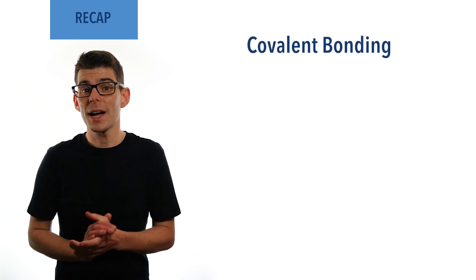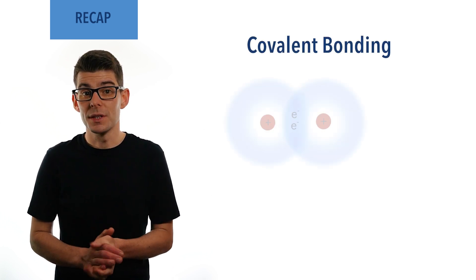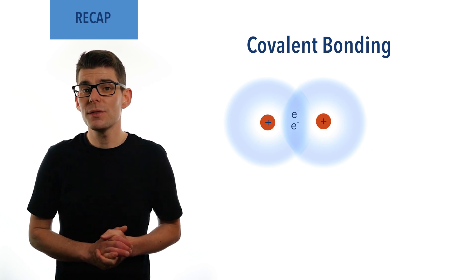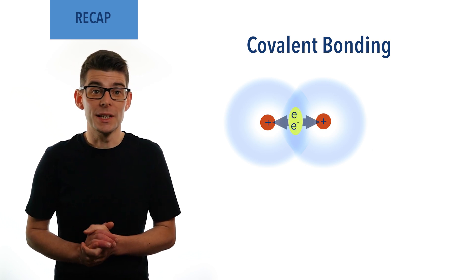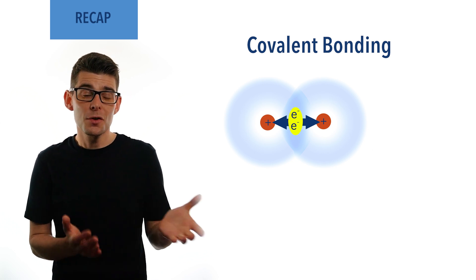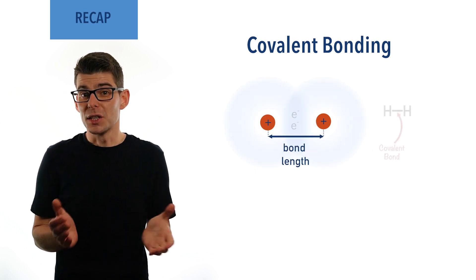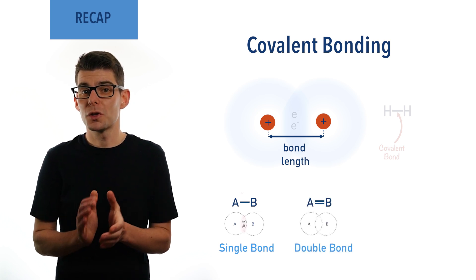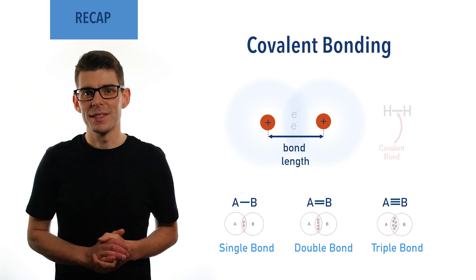Covalent bonds form when two atoms share a pair of electrons, and the negatively charged electrons are attracted to the positively charged nuclei of the bonded atoms. This attraction holds the atoms close together, creating a bond. A single bond involves one pair of shared electrons, a double bond involves two pairs, and a triple bond involves three pairs.